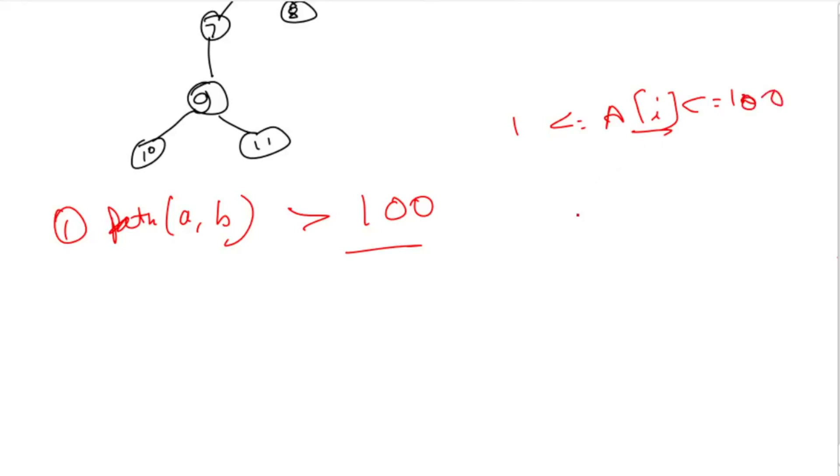If the path length is 101 and the first 100 nodes have values from 1 to 100, then at least one value will repeat, so the minimum difference will be zero. In this case we simply print zero.